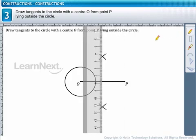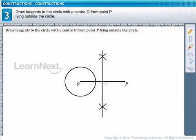Join the intersection points to get the perpendicular bisector of OP that intersects OP at M. Thus, M is the midpoint of OP.